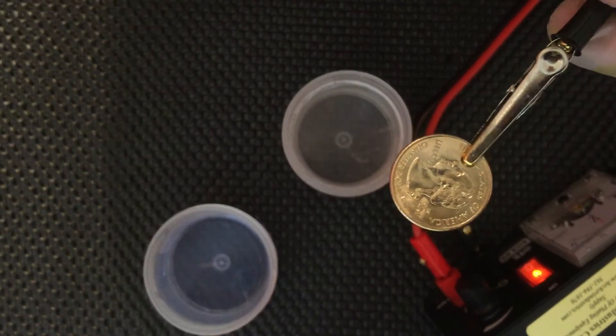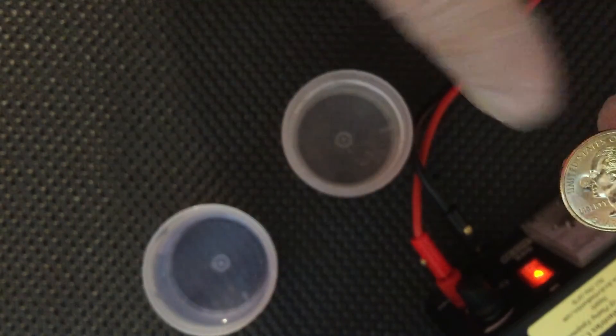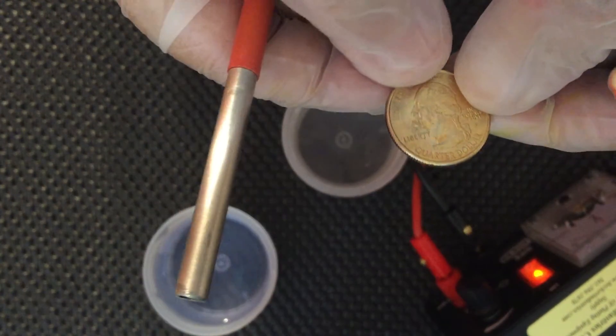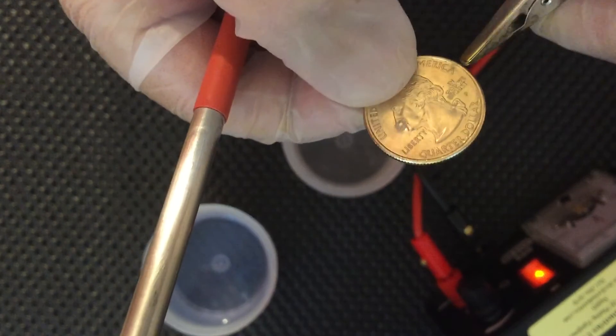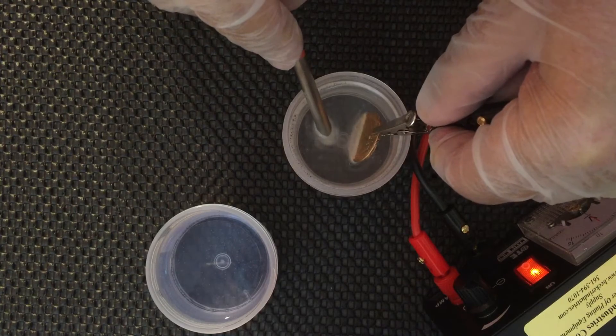Now when you remove this, usually the gold bonds where the alligator clip is. If it's not, you just turn it over to another location and just dip that section in there and then pull it out.